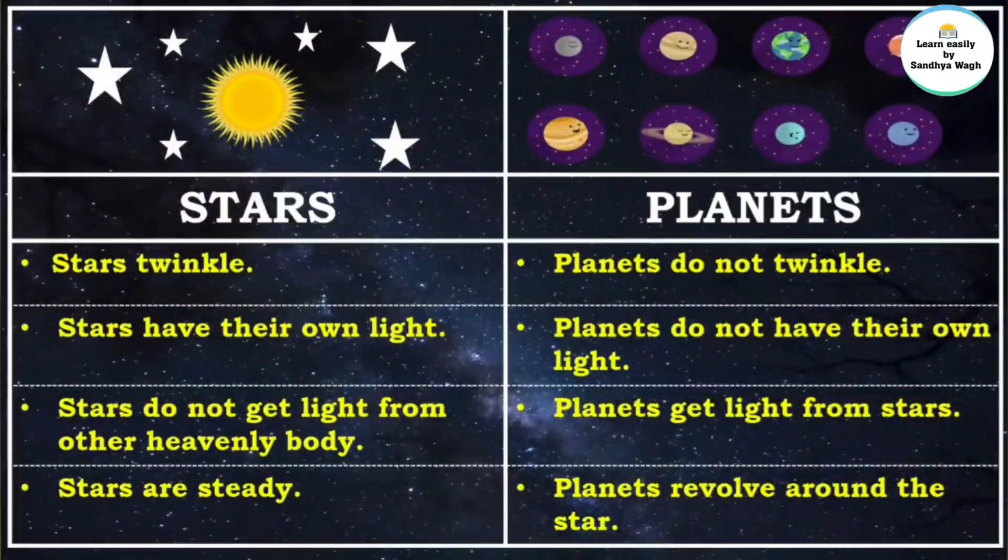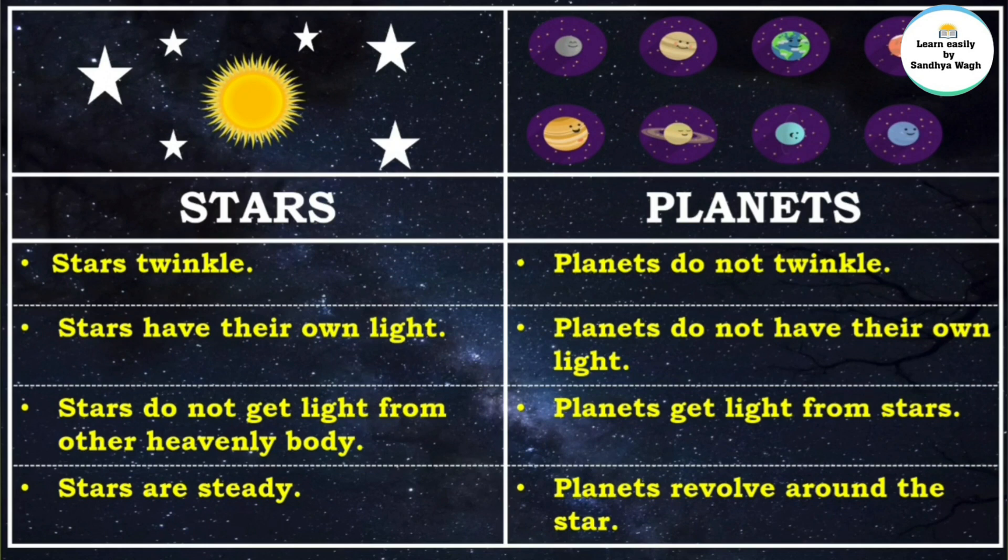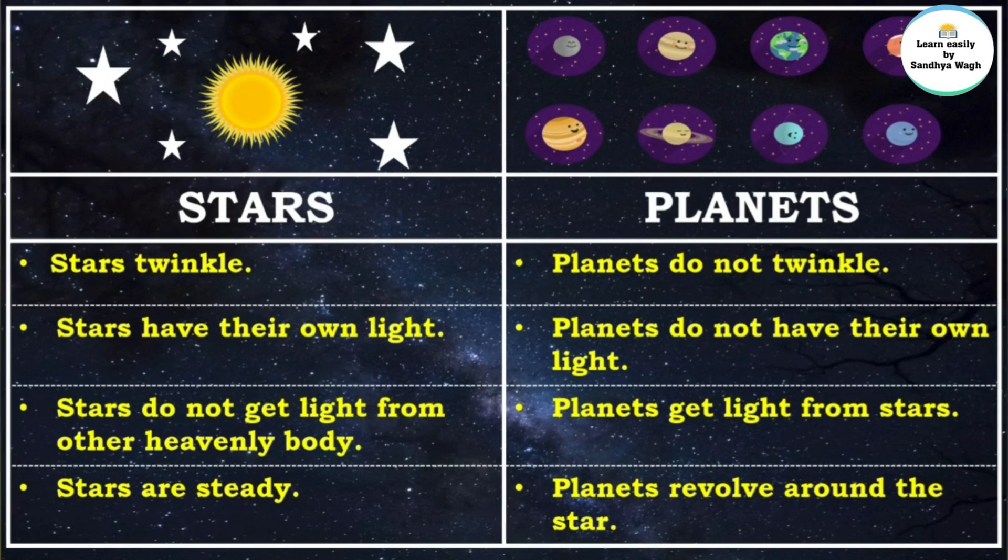So let's see what are the differences between stars and planets. Stars twinkle. Planets do not twinkle. Stars have their own light. Planets do not have their own light. Stars do not get light from other heavenly bodies. Planets get light from stars.